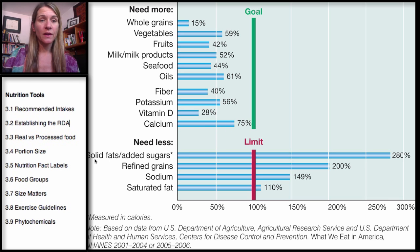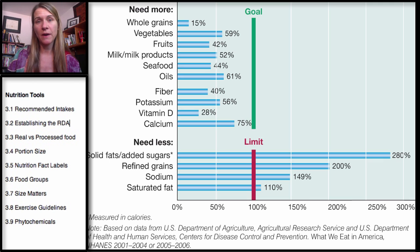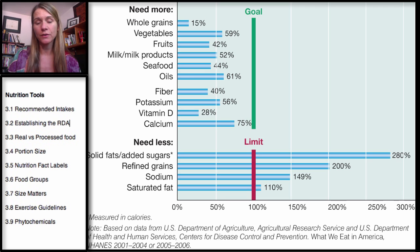What do you need to limit? Solid fats and added sugars. There are some solid fats that are okay — we'll talk about this in the lipid chapter. But added sugars should be less than 5% of your diet. Added sugars include table sugar, corn syrup, high fructose corn syrup, honey — most of which is highly refined — maple syrup, and fruit juice sweeteners. These all need to be limited. Refined grains are another thing to limit: a lot of bread products, crackers, cereals, and pastas are refined grains.